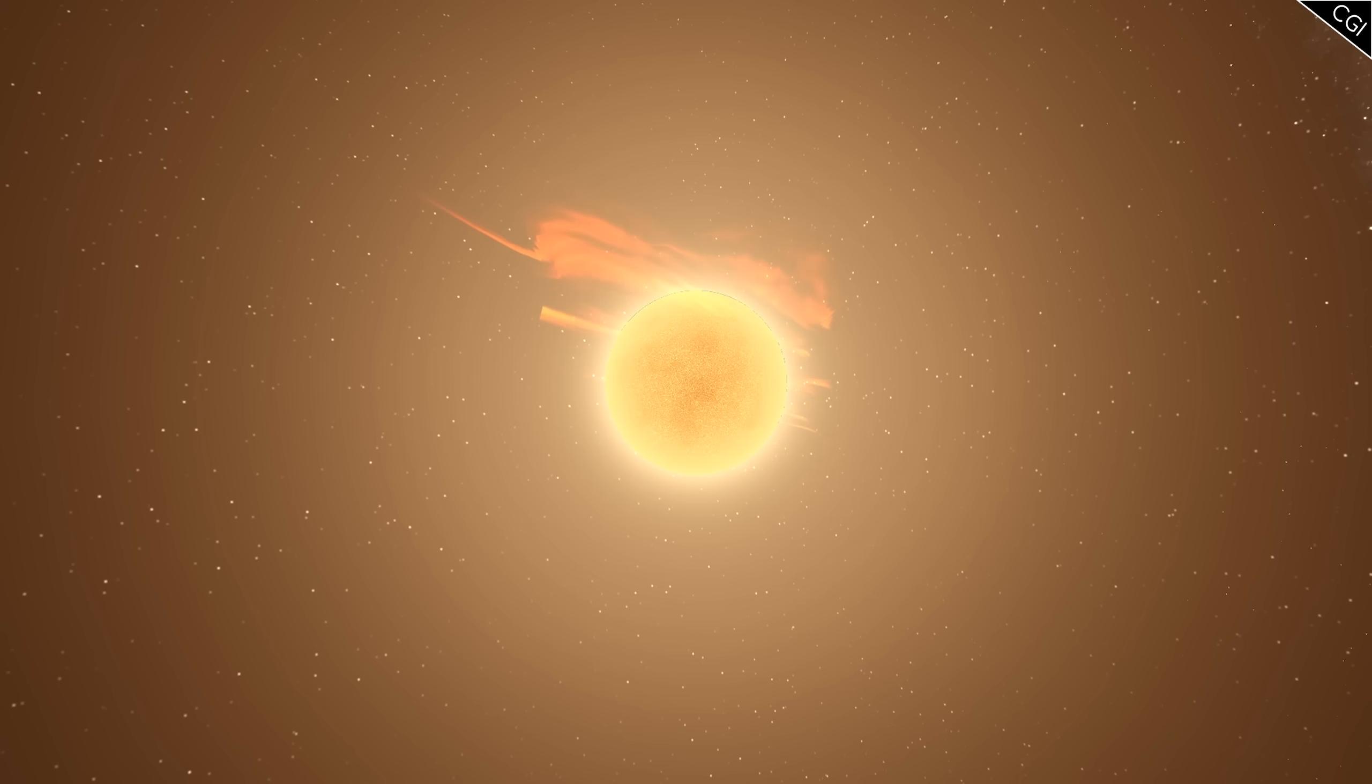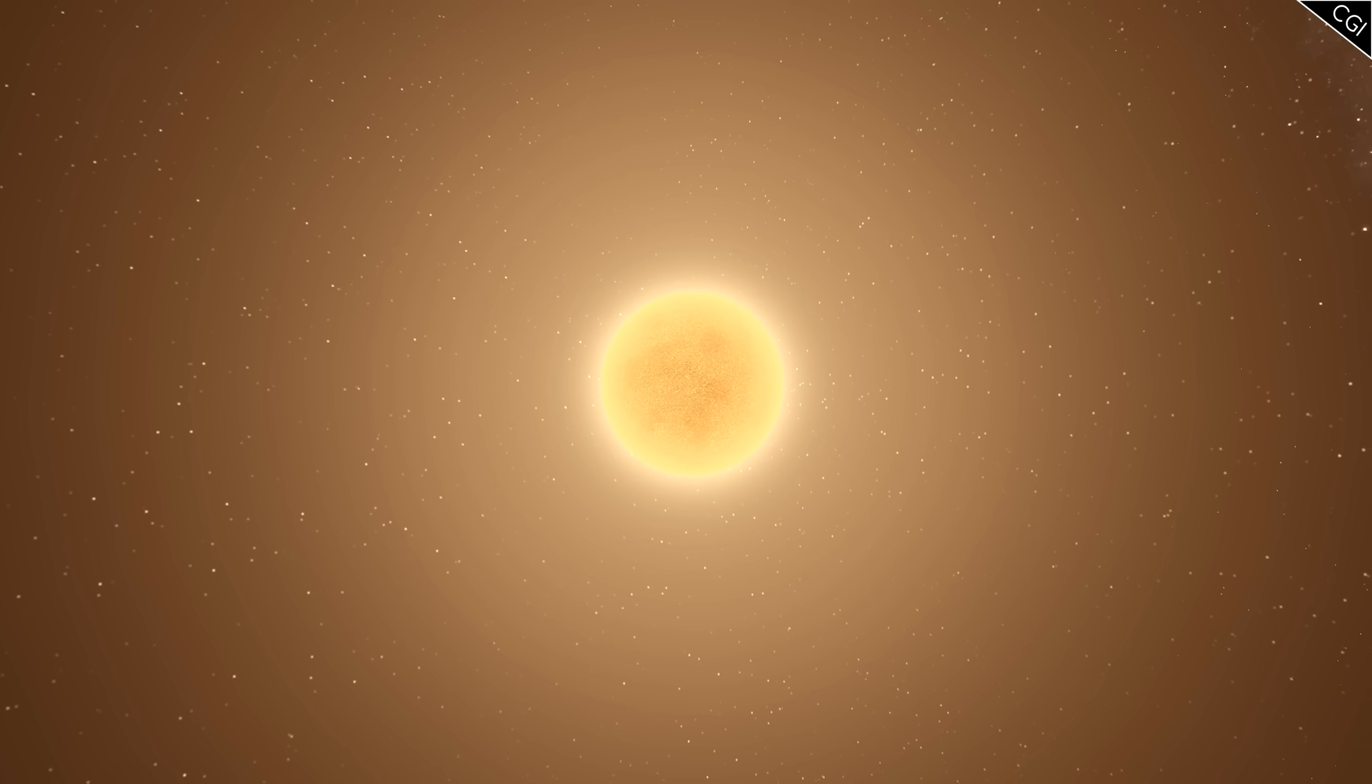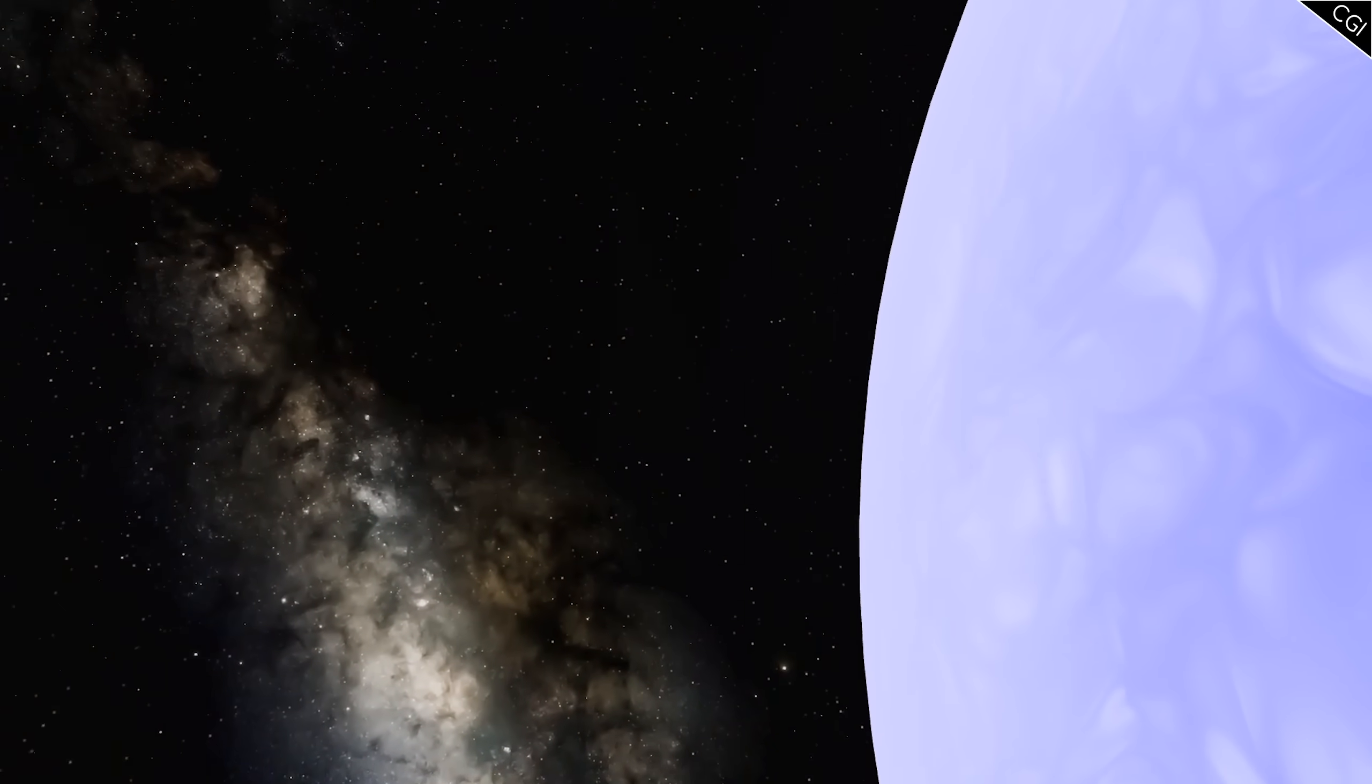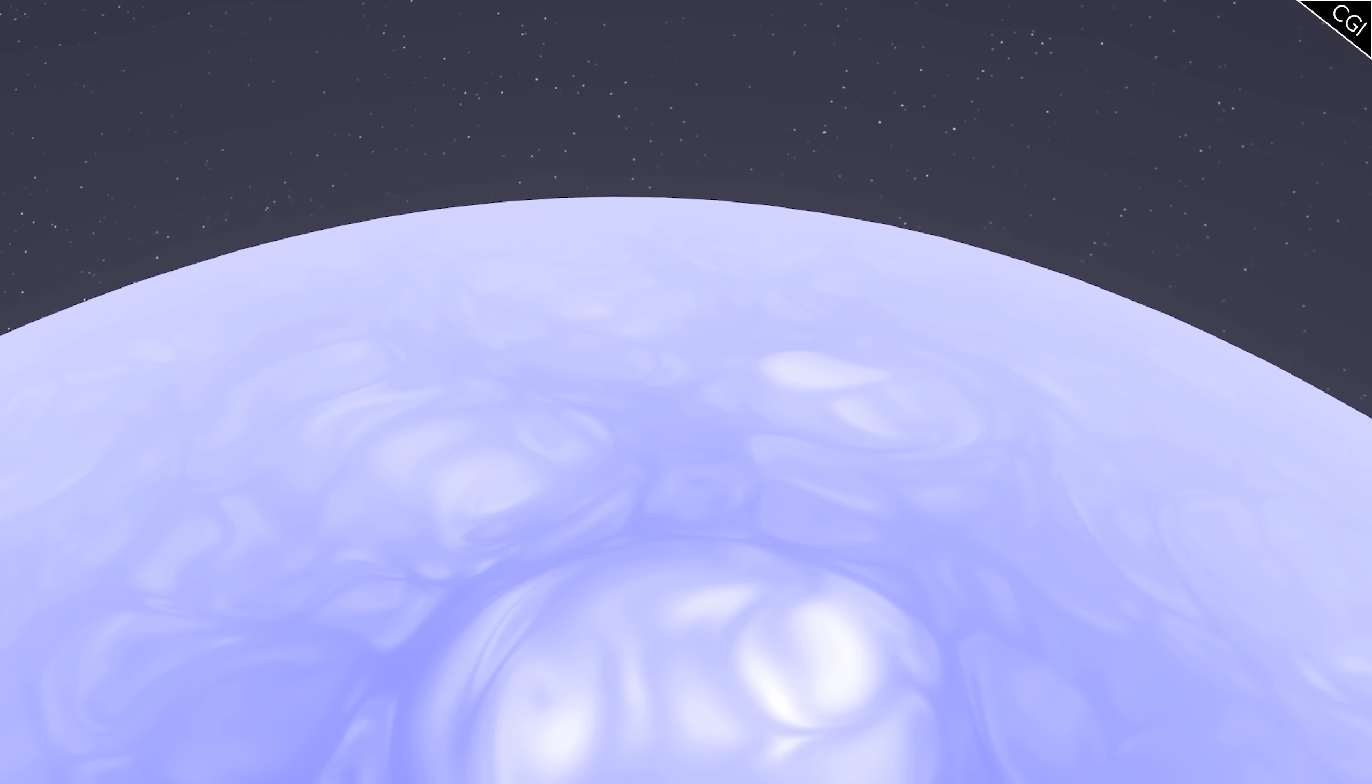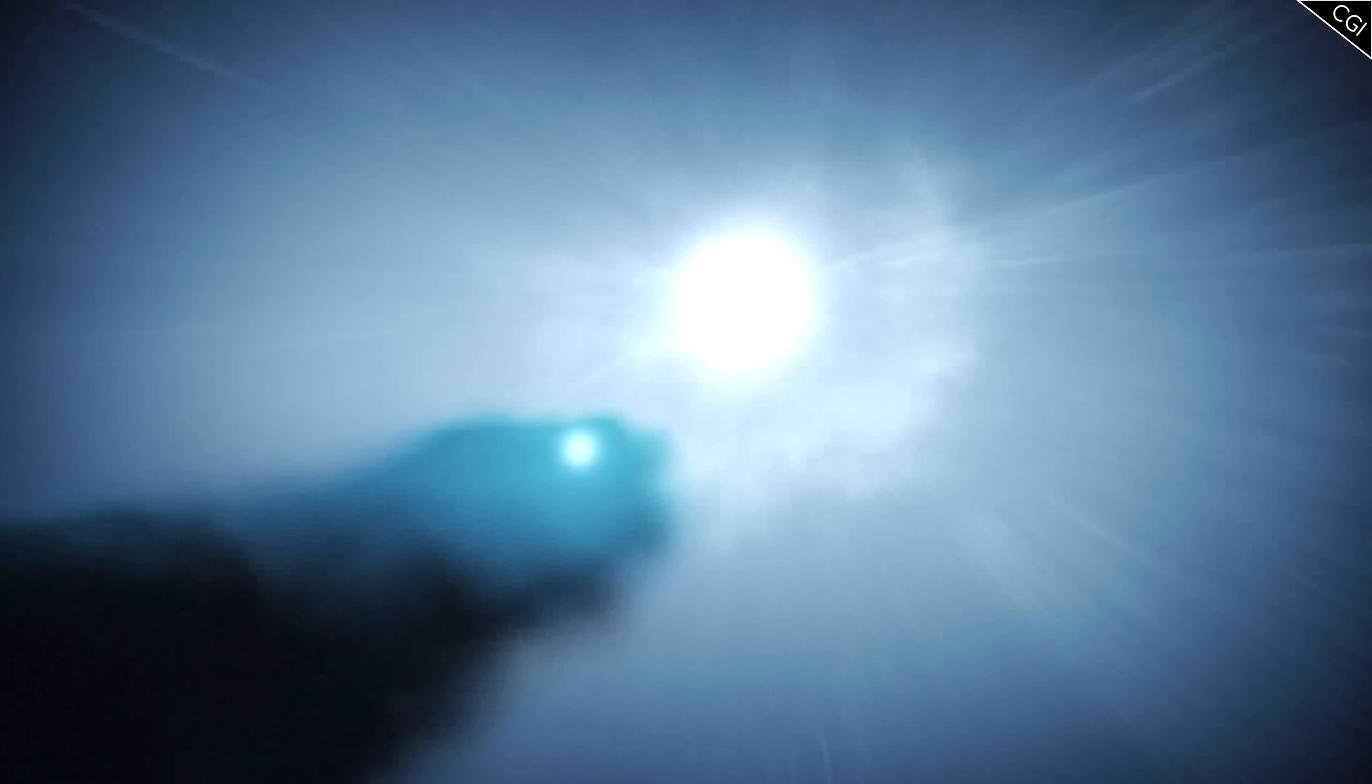Blue supergiants can be many times the mass of our sun. The theoretical limit being 150 solar masses. Their volume is also big. They make the sun look almost puny in comparison.